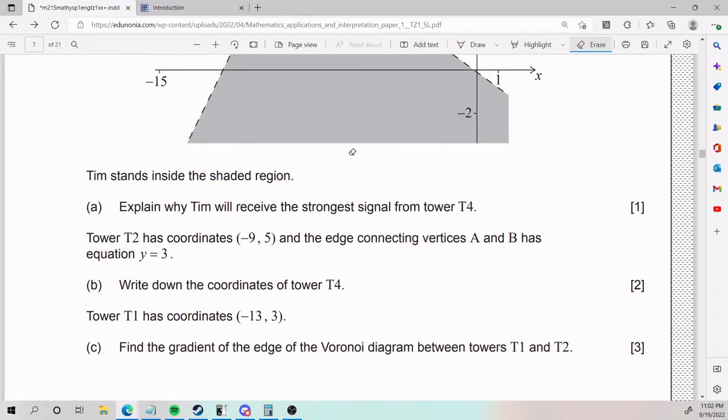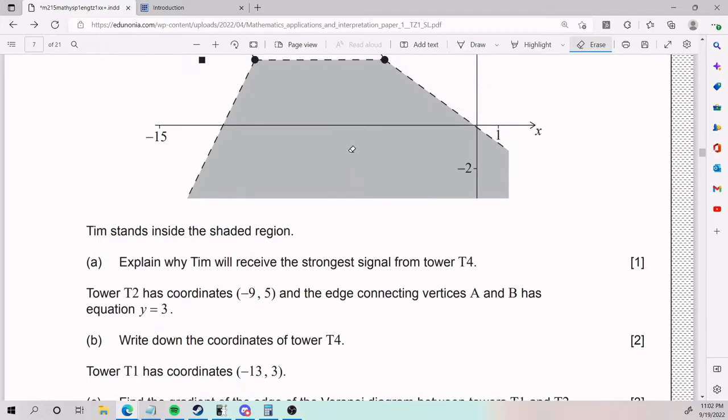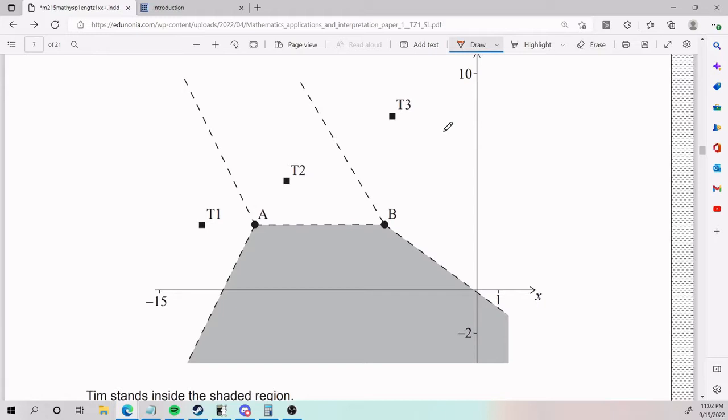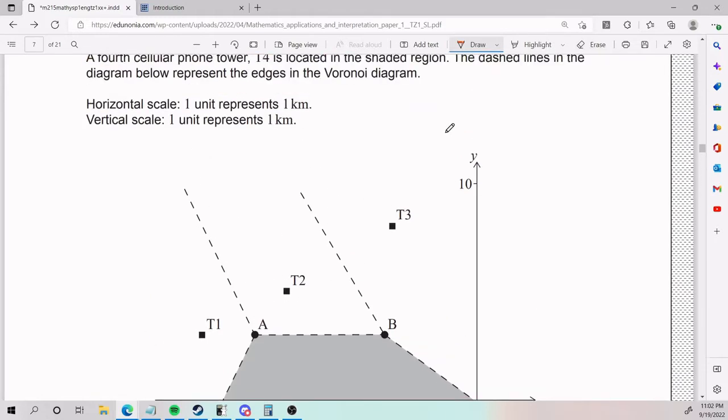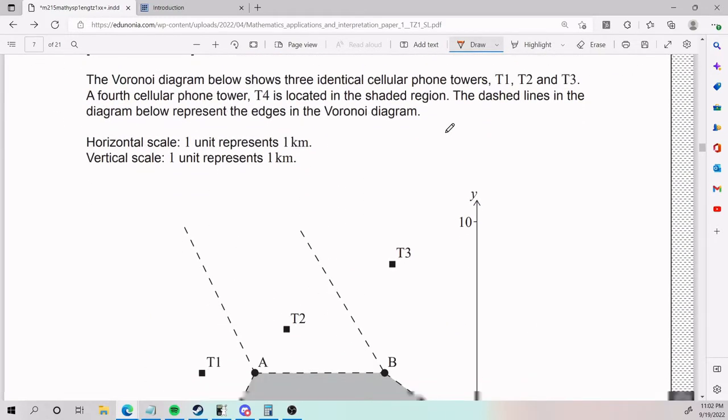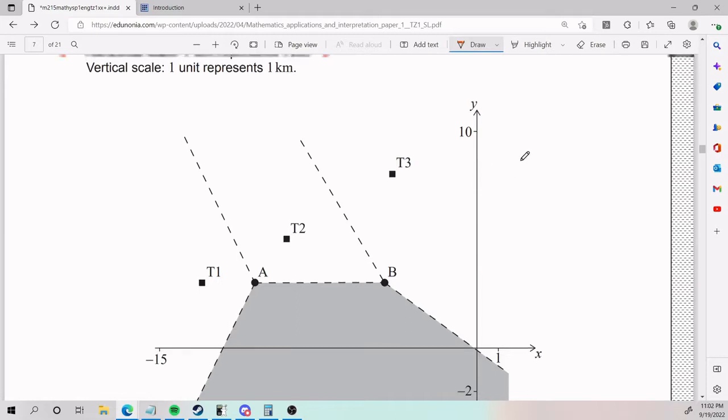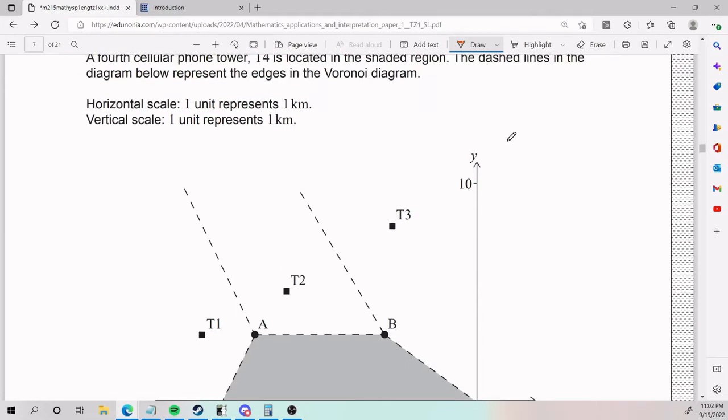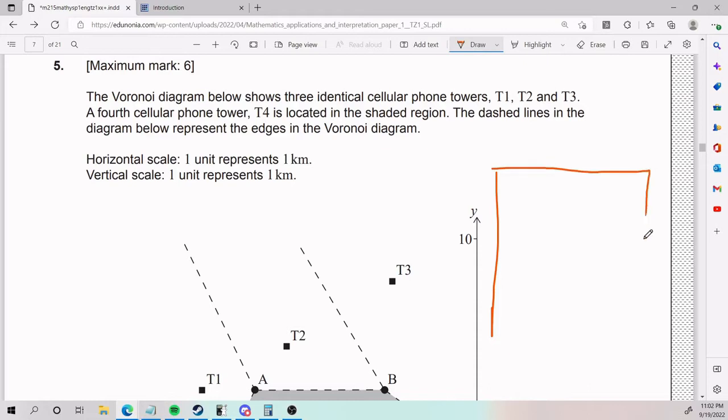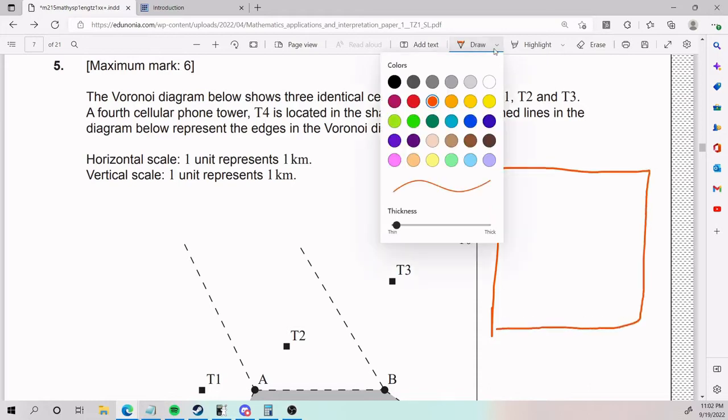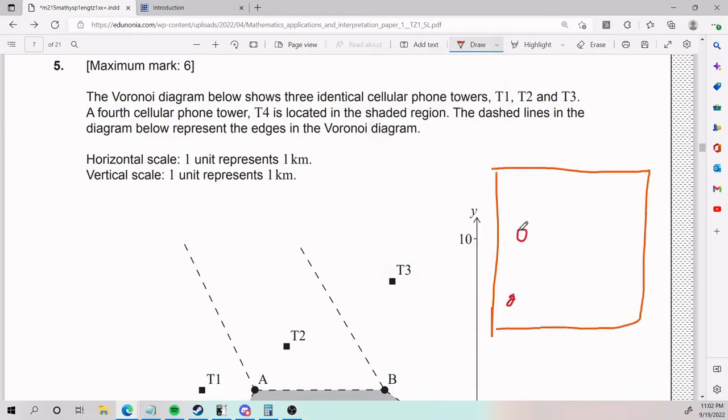Tim stands inside the shaded region. Explain why Tim will receive the strongest signal from tower T4. So let's explain a little bit about Voronoi Diagrams. So a Voronoi Diagram is like, I'm going to make one on the side actually. Let's say that this is the limits of my diagram, and I just put a bunch of dots in a relatively random way.